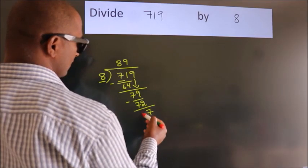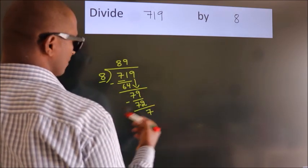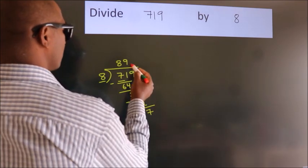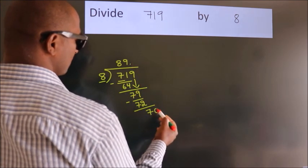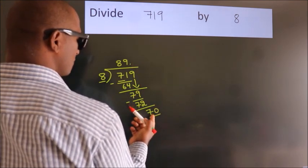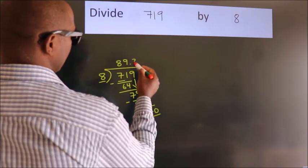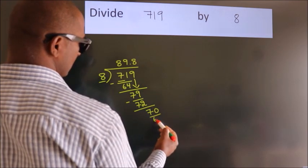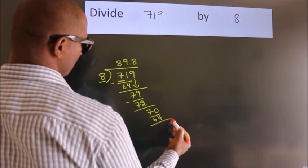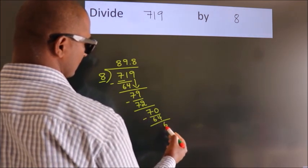After this, no more numbers to bring down. So what we do is we put a dot and take 0. So 70. A number close to 70 in the 8 table is 8 times 8, 64. Now we subtract. We get 6.